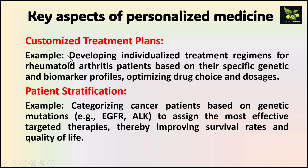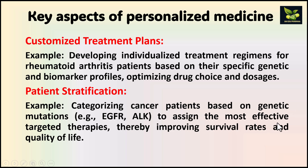Next is customized treatment plans. Individual treatment regimens are developed according to individual treatment needs — for example, for rheumatoid arthritis patients, drug choice and dosages are optimized based on their specific genetic and biomarker profiles. Next is patient stratification. An example is categorizing cancer patients based on their genetic mutations to assign the most effective treatment therapies, thereby improving survival rates and quality of life.